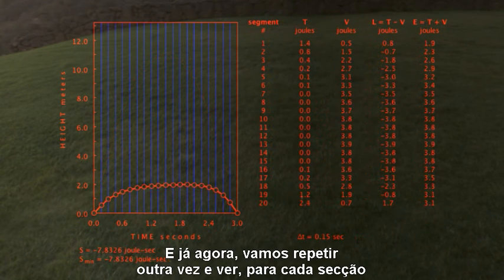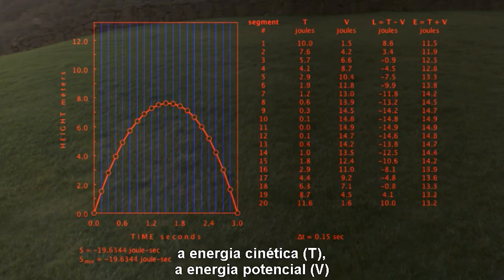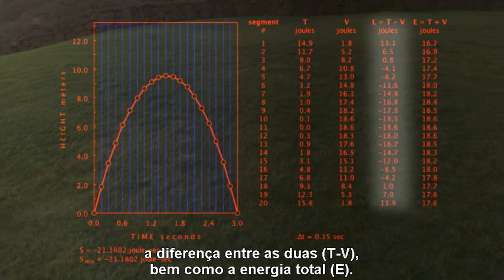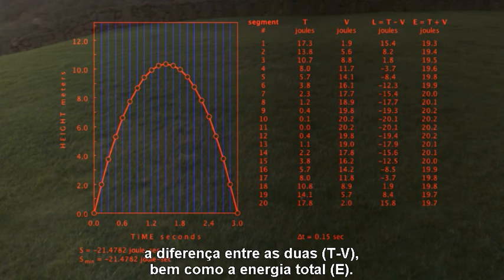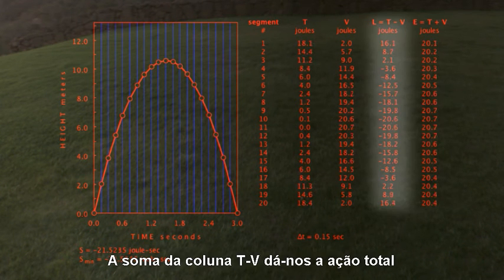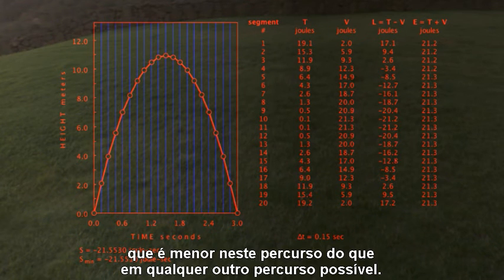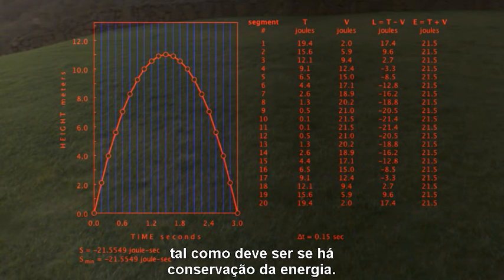Since we are on a roll, let's do it one more time, showing for each section the kinetic energy, the potential energy, the difference between the two, as well as the total energy. Adding the T minus V column gives the total action, which is smaller on the path than any other possible path. You can also see that the total energy is constant, as it must be if energy is conserved.